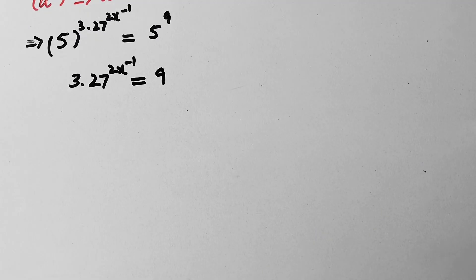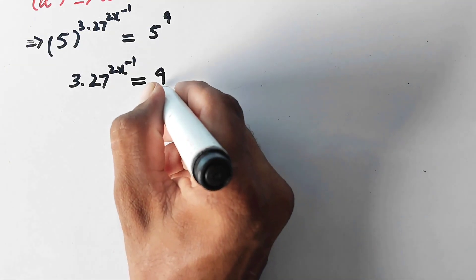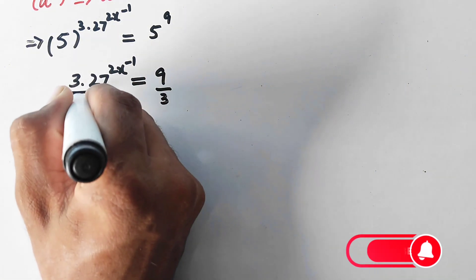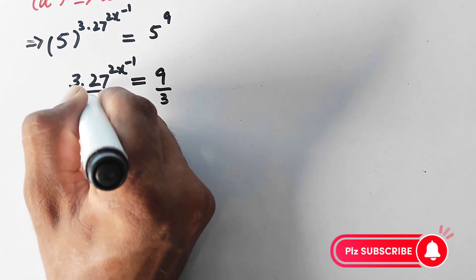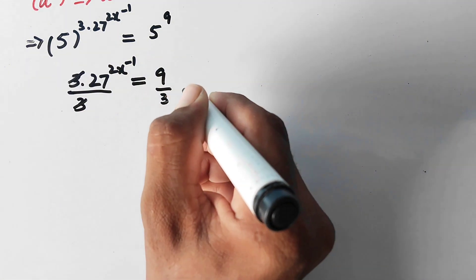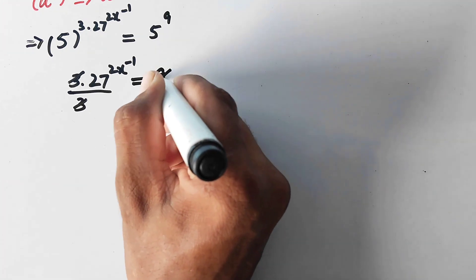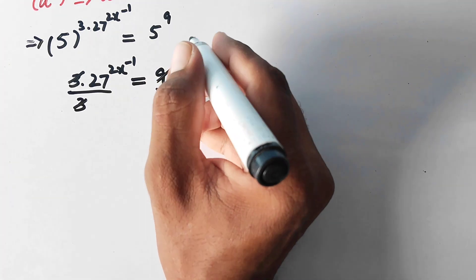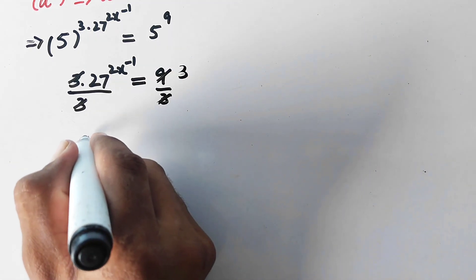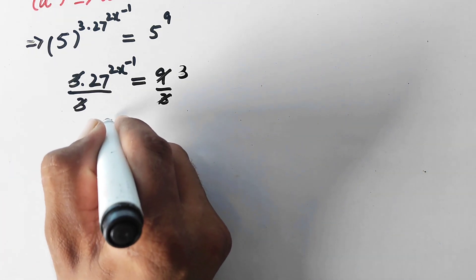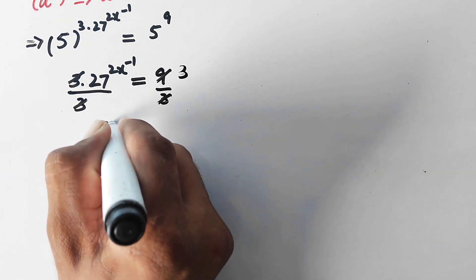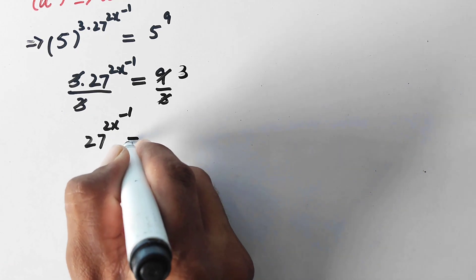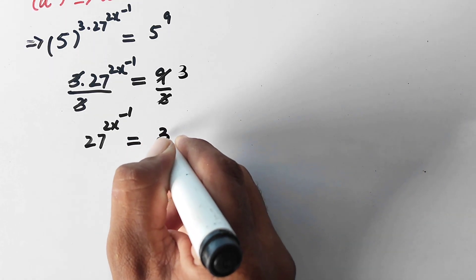Now we will divide both sides by 3. The 3 on the left cancels, and 9 divided by 3 equals 3. So we are left with 27 raised to power 2x minus 1 is equal to 3.